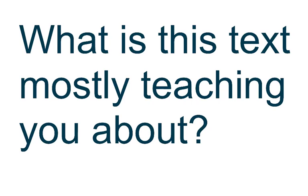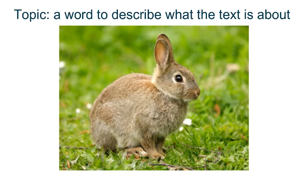What is this text mostly teaching you about? To answer this question, you need to find out the topic — a word to describe what the text is about. The topic of this photo is a rabbit. There are other things in the photo like the grass and the flowers, but the rabbit is what the photo is mostly about.